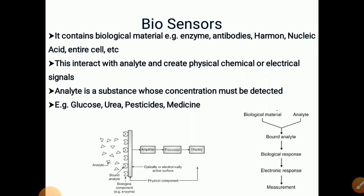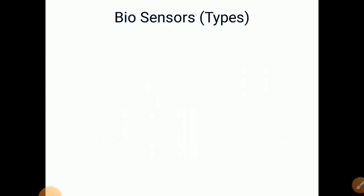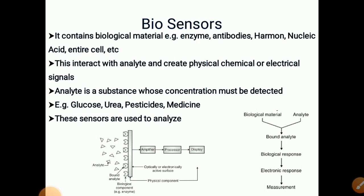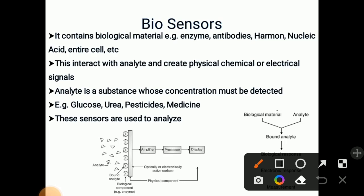For example, glucose, urea, pesticides, medicine. These sensors are used to analyze. The biological materials are kept on optically or electronically active surface, and on that analyte is kept.